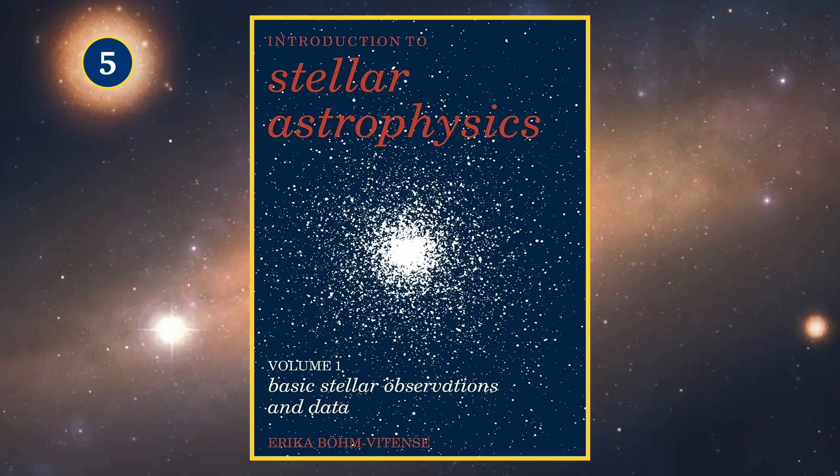Now, this book is actually a set of three books and is geared more towards people interested in observational astrophysics, so people who want to look at stars through telescopes. As we can see, the first volume is called Basic Stellar Observations and Data, so it's starting off with the basics of observing.